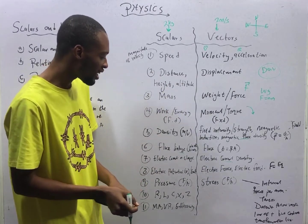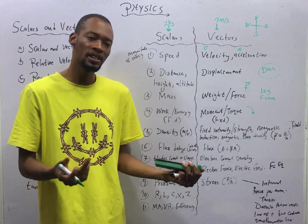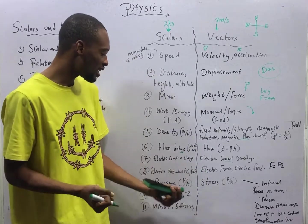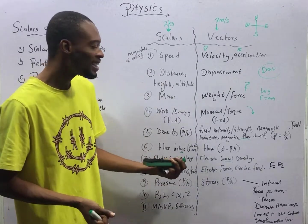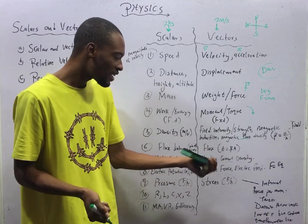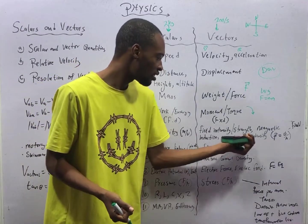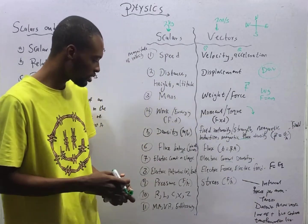Electric potential, EMF, that is voltage, or electromagnetic force, which is voltage, they are scalars. But electric force, electric field, these are vector quantities. Field, field. They are vector quantity.